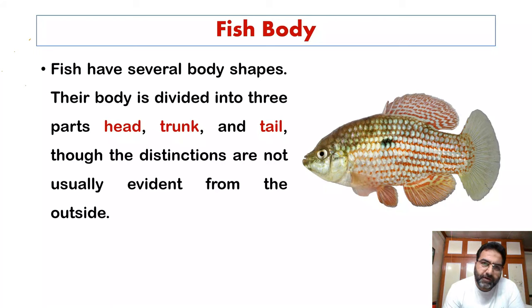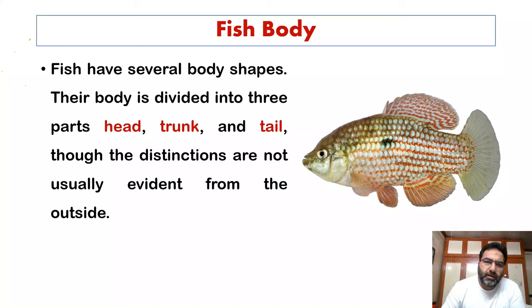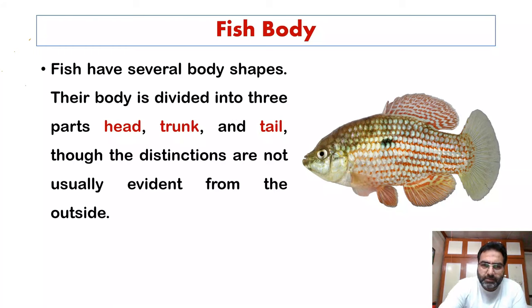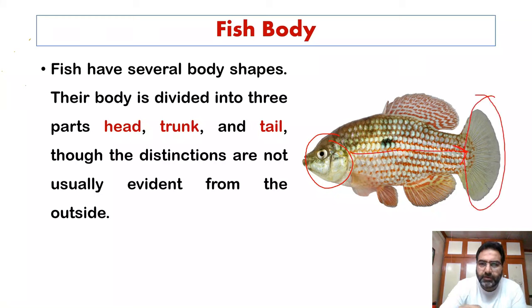Fishes are diverse creatures and they are of different shapes and sizes — they are as small as a grain of rice and as large as whale sharks. Fish have several body shapes; their body is divided into three parts: head, trunk, and tail.